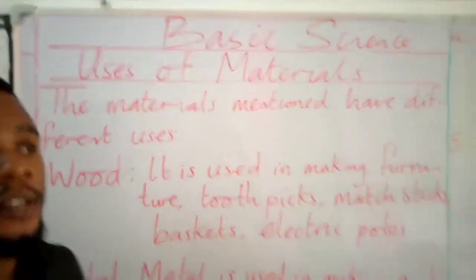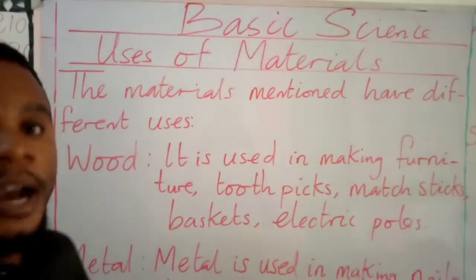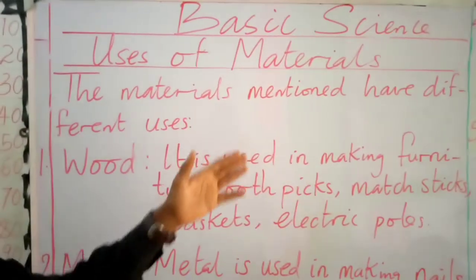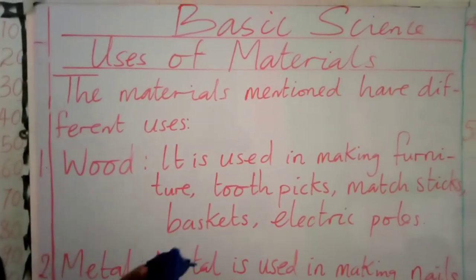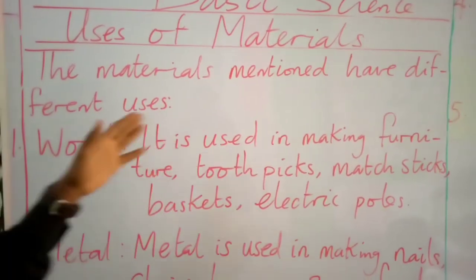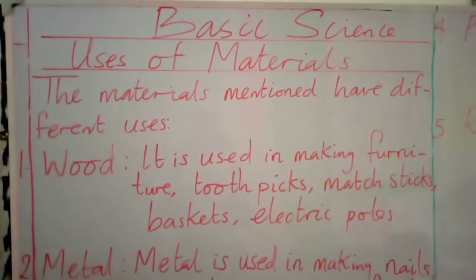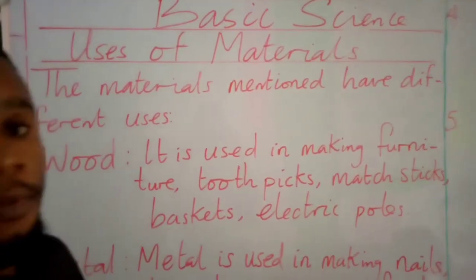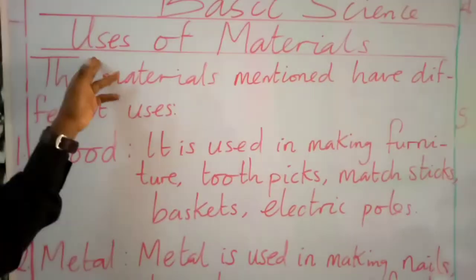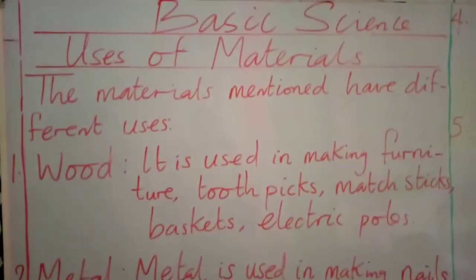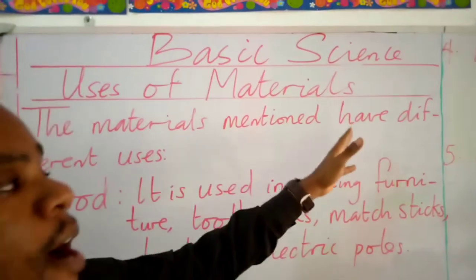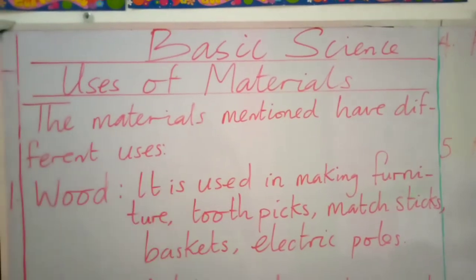Remember in our previous class we talked about materials and its types. We said materials are resources used to produce finished goods. In the types of materials we listed wood, metal, ceramic, plastic and rubber. In today's class we'll be looking at uses of materials — what can we use these materials to produce? The materials mentioned have different uses.